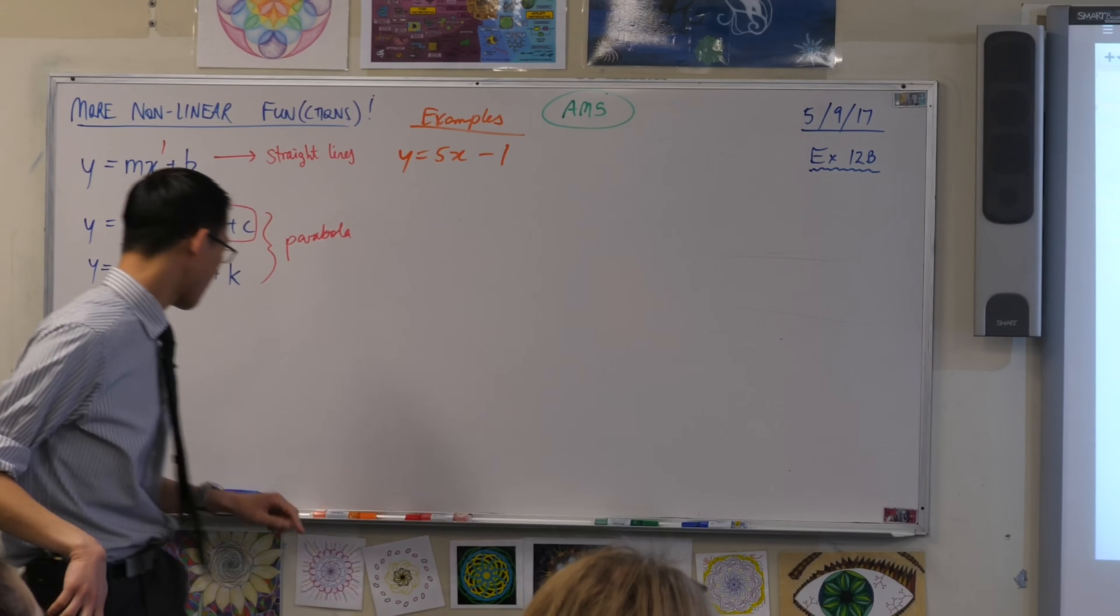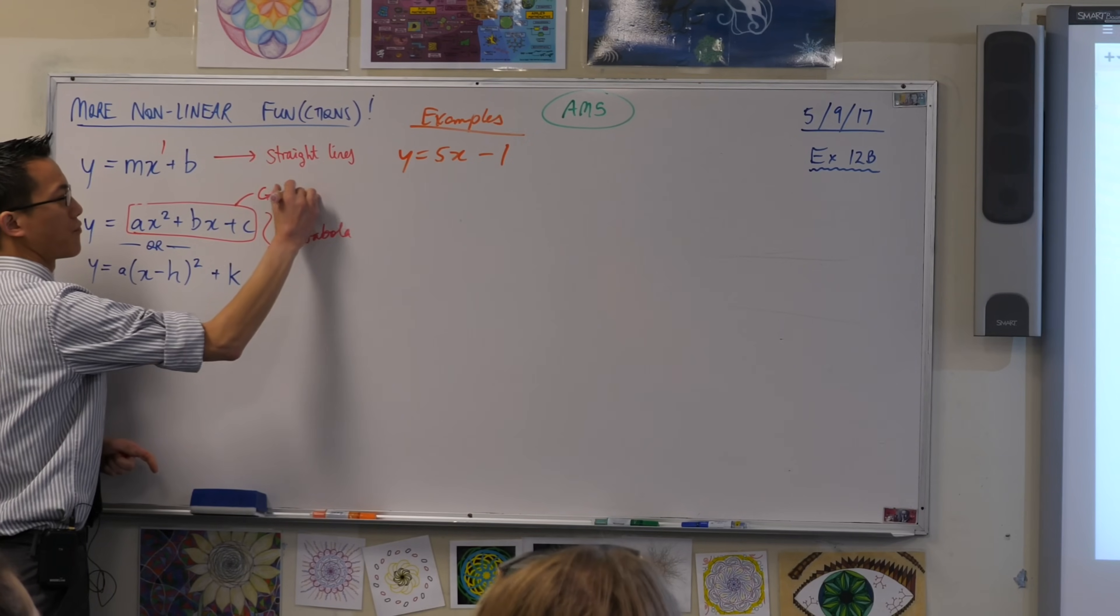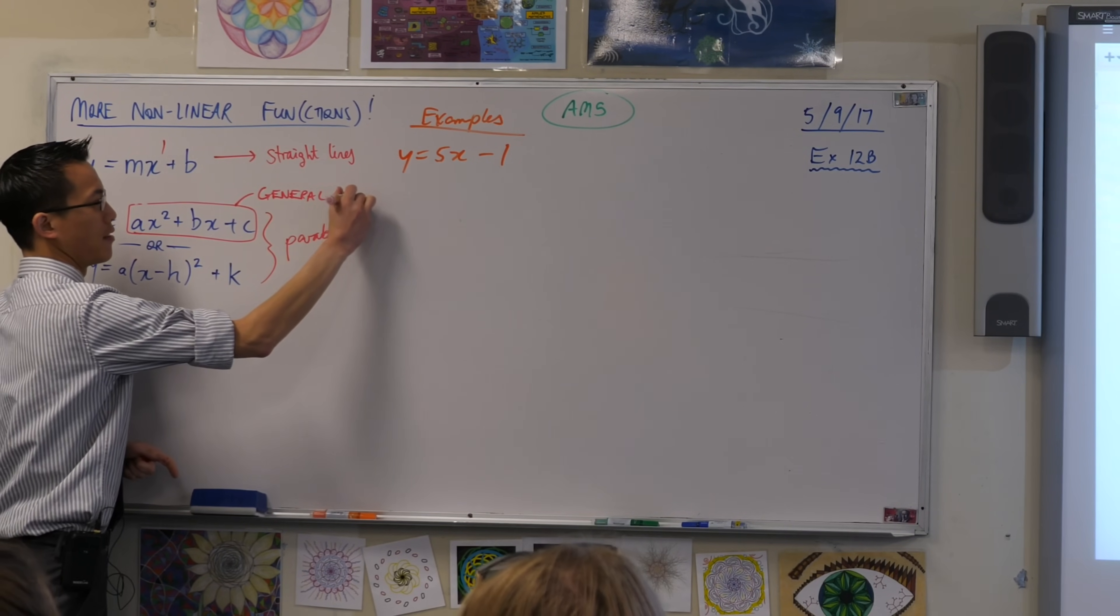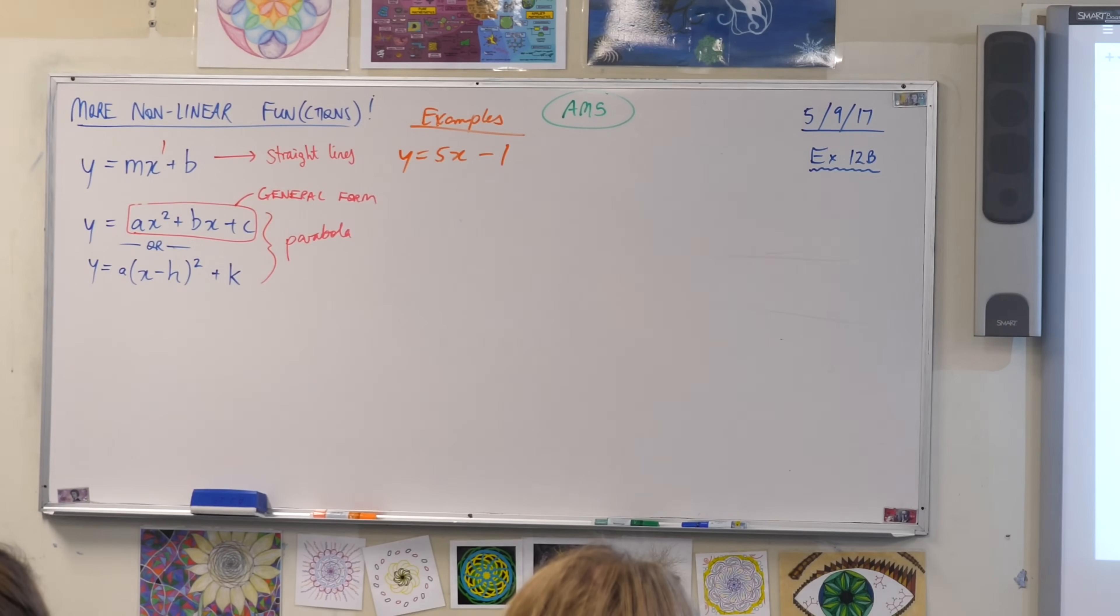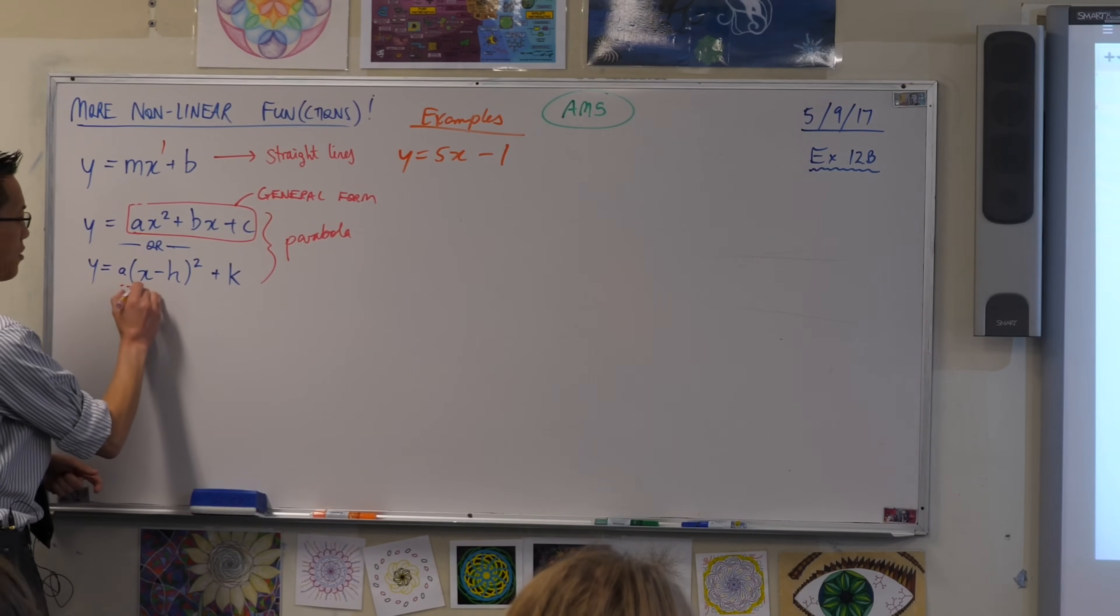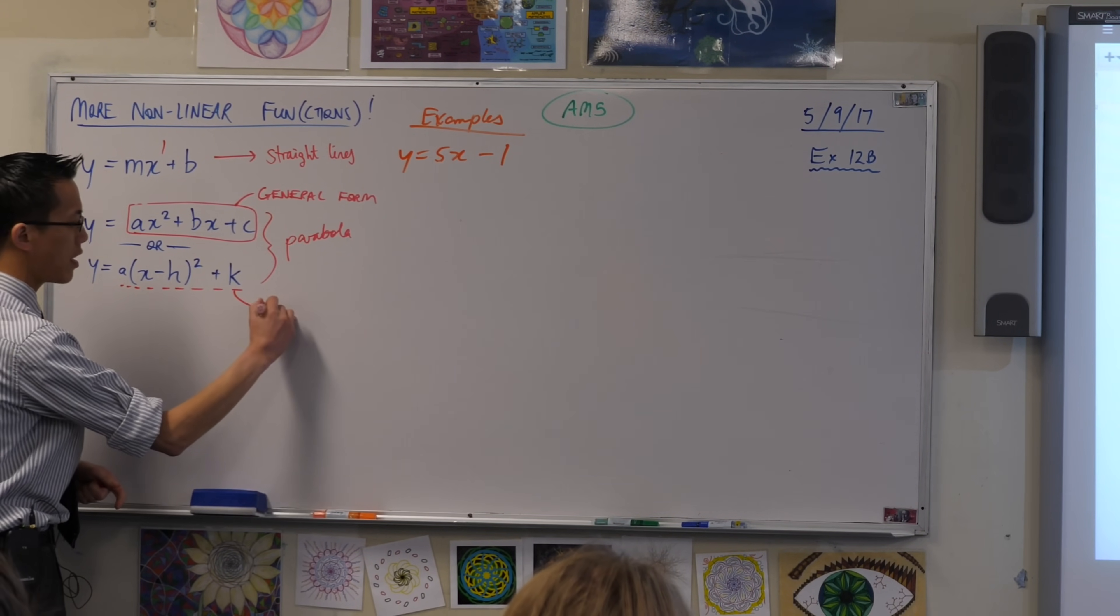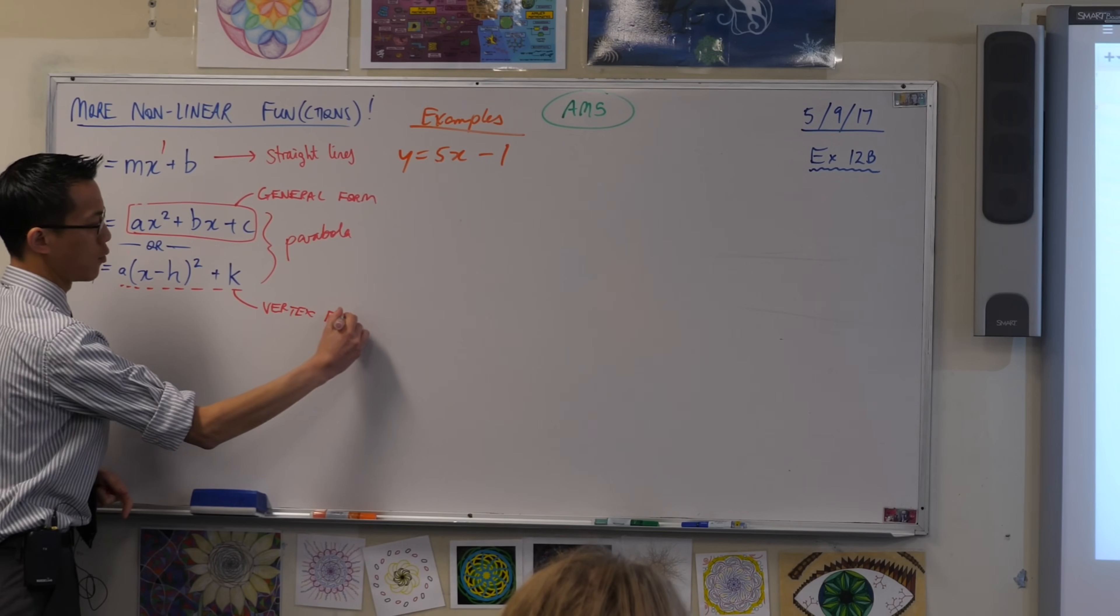This guy here is called general form. This guy down here is called vertex form. There's a couple of names, but this is the most helpful one.